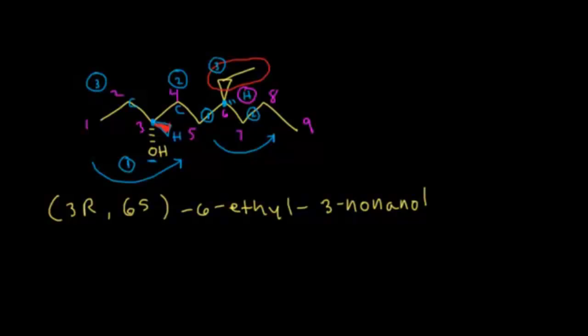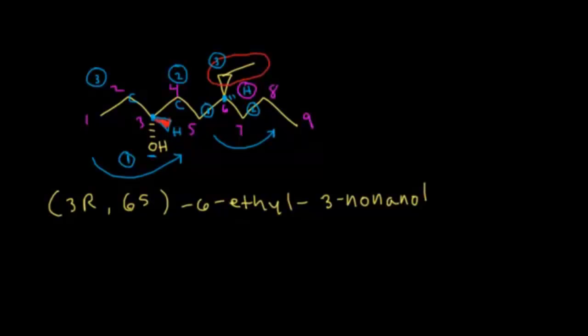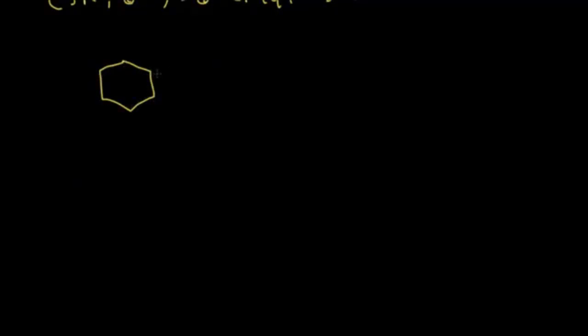Let's look at cyclic alcohols — ring systems. For an alcohol with six carbons in a ring and an OH coming off it, without the OH we'd call it cyclohexane. Since it's an alcohol, we call it cyclohexanol. You don't really need a number since the position is implied.